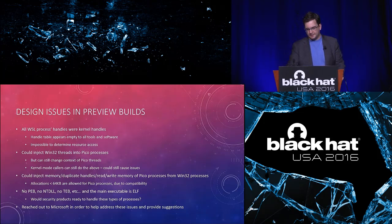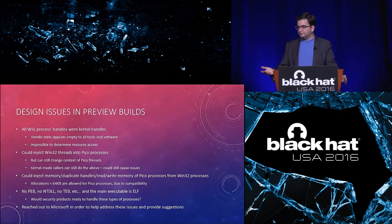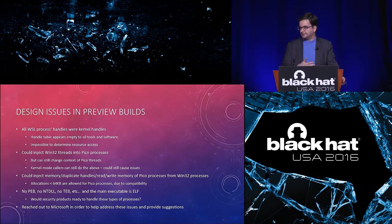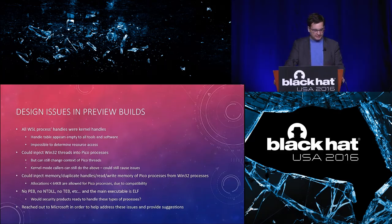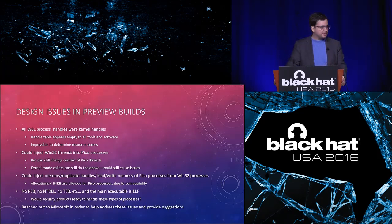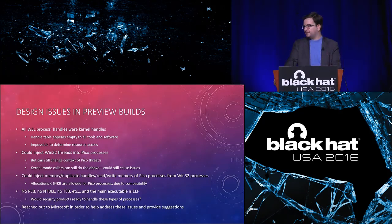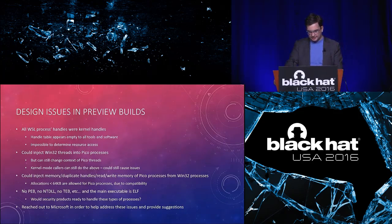The weirdest issue was injecting an NT thread inside a Pico process. Pico threads were talking to the Linux kernel while Windows threads talked to the Windows kernel. The Windows kernel allows mapping addresses below 64K for Linux apps for compatibility, but doesn't allow that for Windows apps because it's often used for null pointer exploitation. So you could use the Linux thread to map memory you normally don't have access to as a Windows thread, then use the Windows thread to launch an exploit that would normally be mitigated. And then there's the fact that there's no PEB, no TEB — it's all ELF. How much security software today is ready to hash an ELF file, understand it, extract feature vectors, and run indicators of compromise on it?